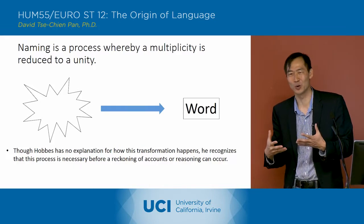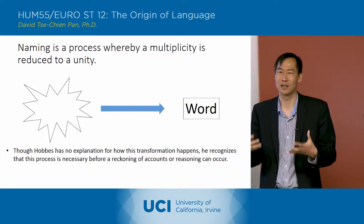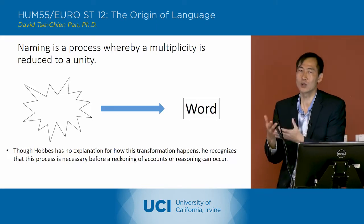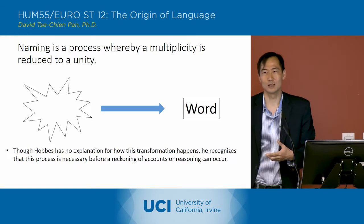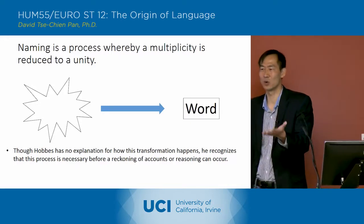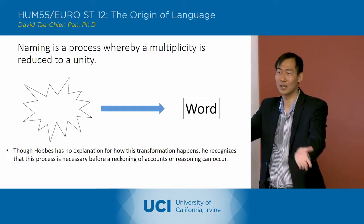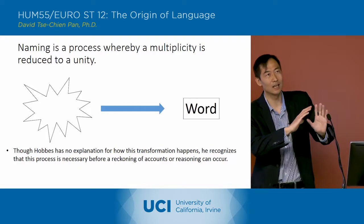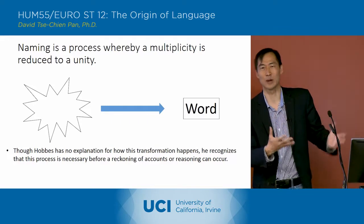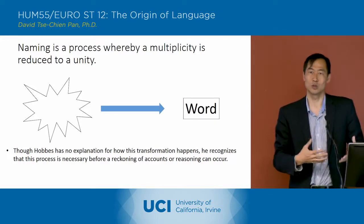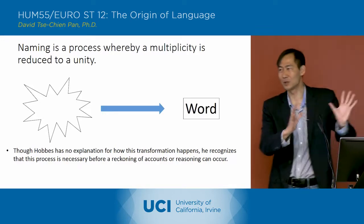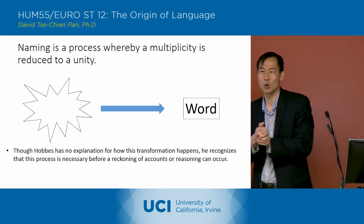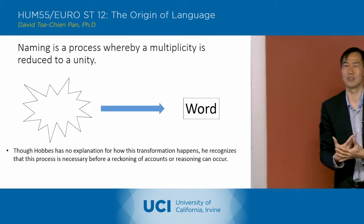I'm adding a little bit to what he's doing just to highlight how he understands this process. Basically, what he's saying is that in language, you're turning something that's just an amorphous thing — when you look at something in the world, like a wall or a tree outside, there are lots of things you can say about it. But when you reduce it to a word, you're taking that multiplicity of impressions and turning it into a unity, putting it into one category.